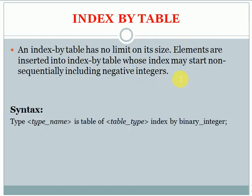Next is the indexed by table, also called an associative array. There is no limit for indexed by table — unlike Varray which has a 2 GB limit, indexed by table and nested table have no fixed limit; you can store as much data as your database schema's tablespace allows. The sorting order is non-sequential, and it can store negative index values as well, which is not possible with nested table or Varray.